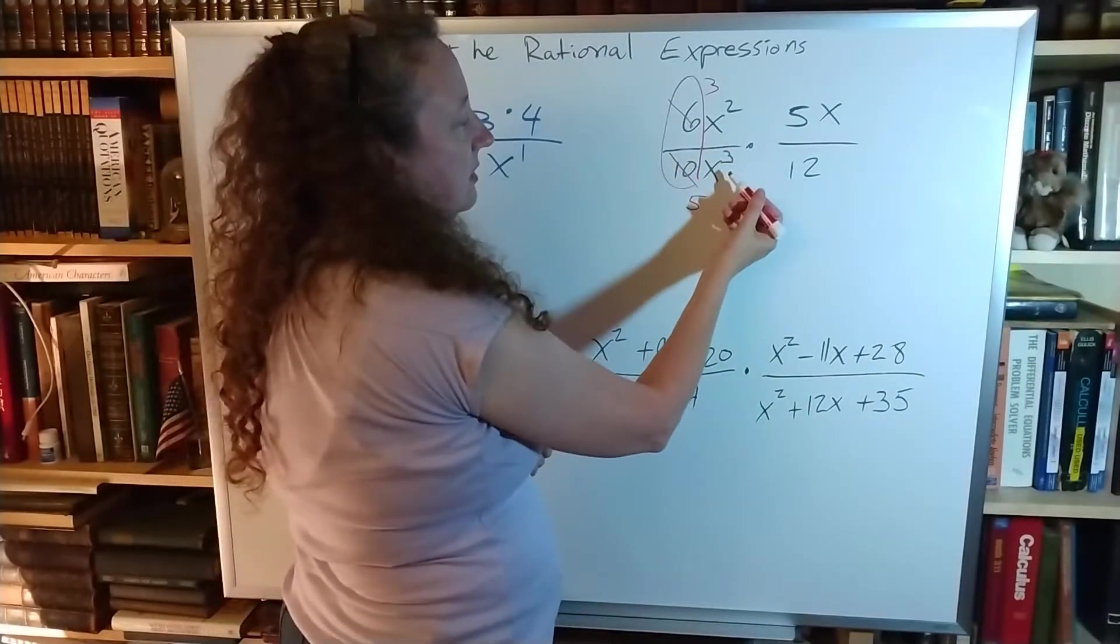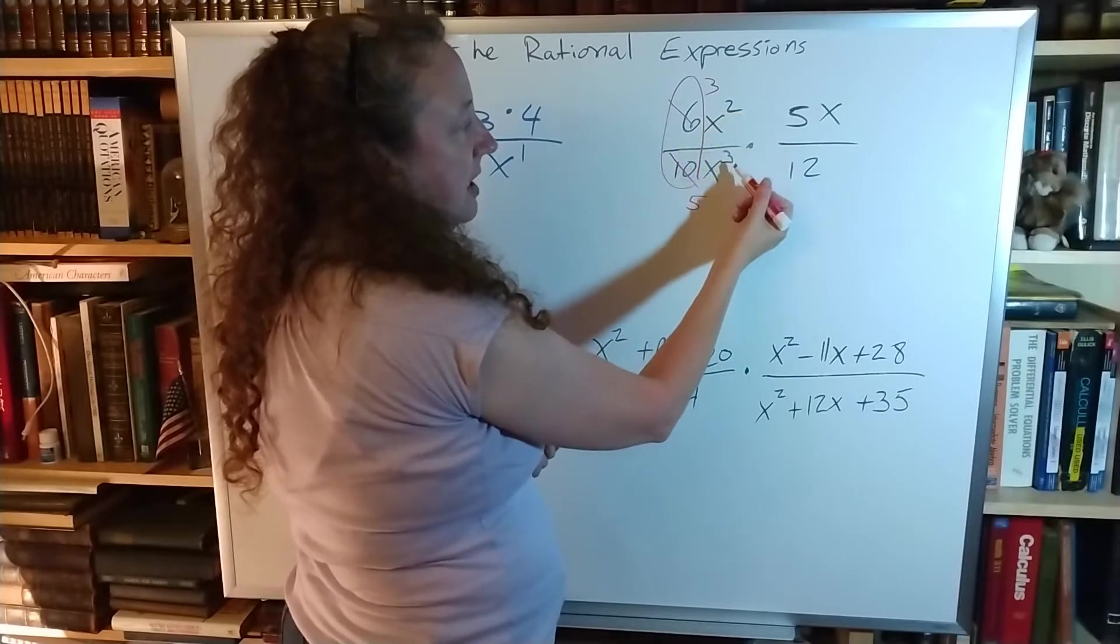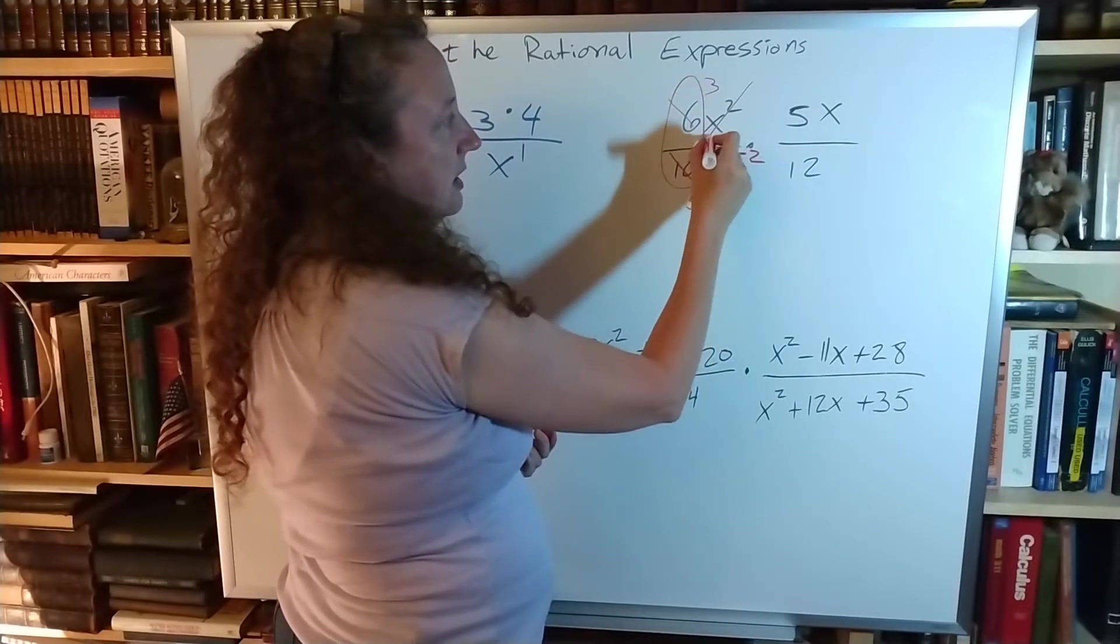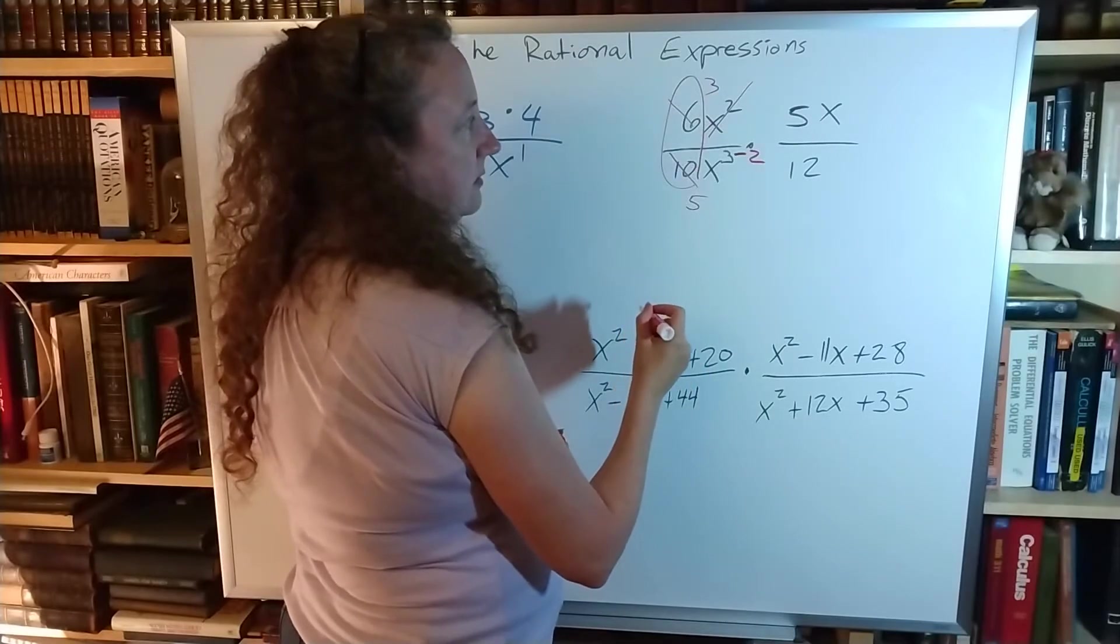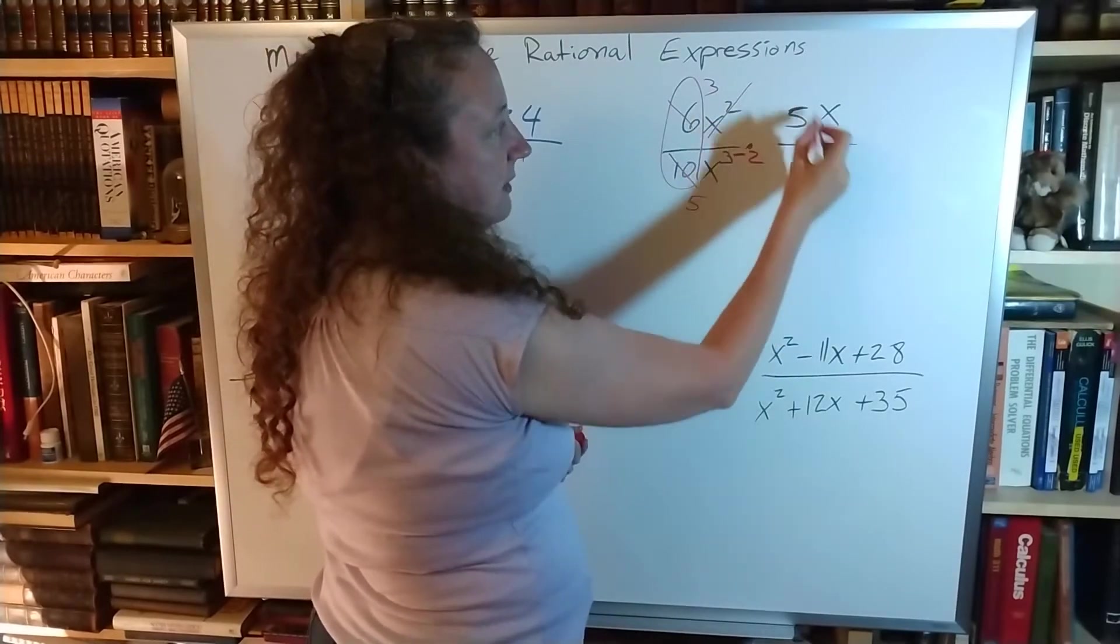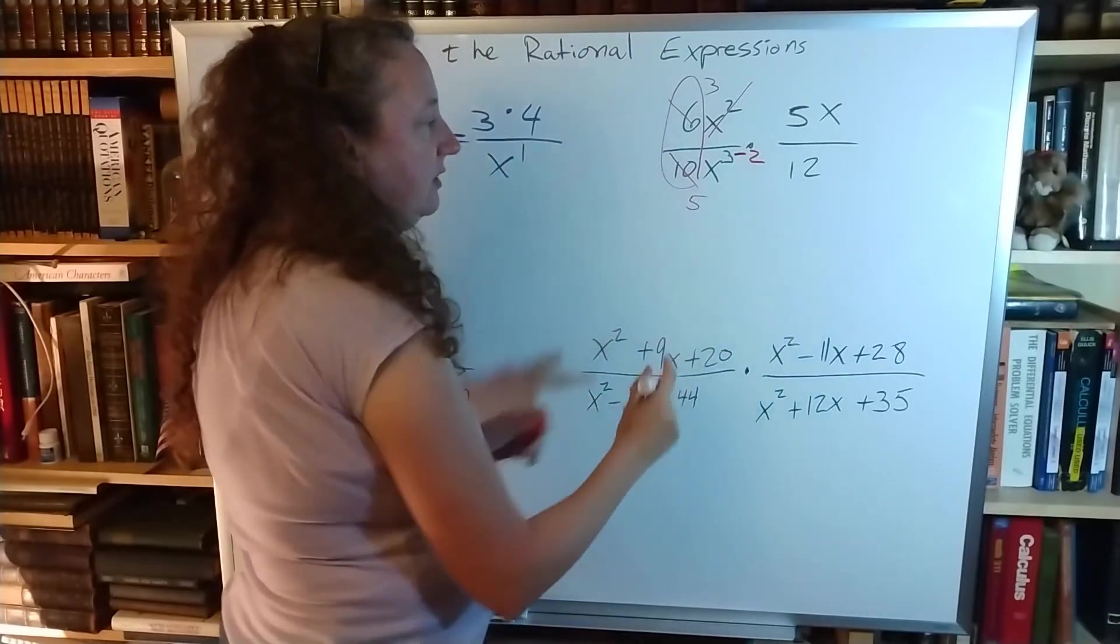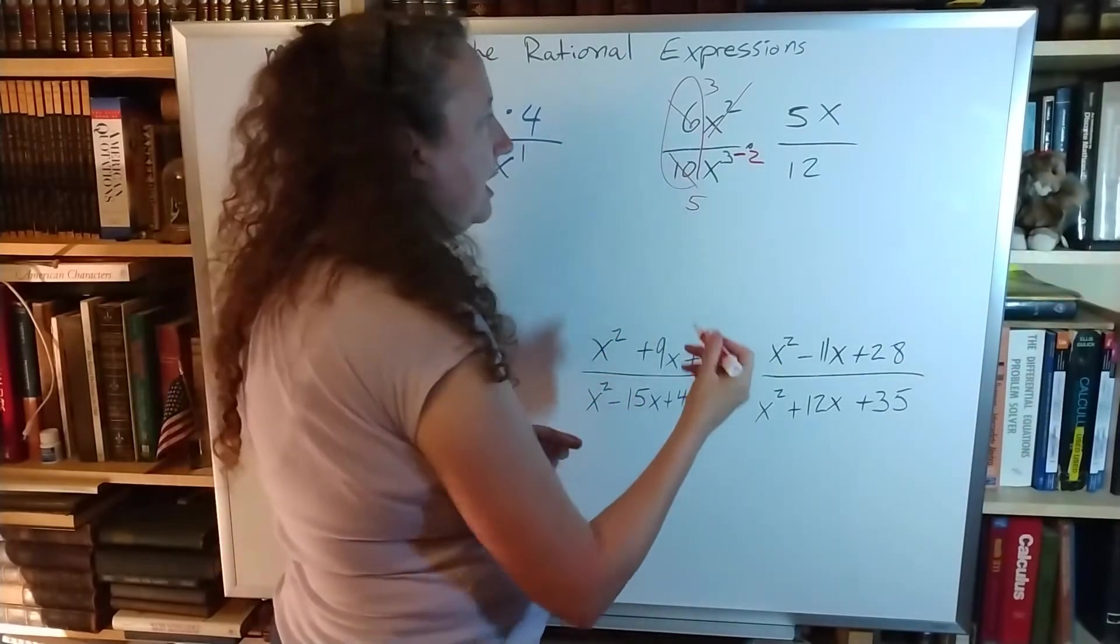The x's, I have 2 up top, I have 3 on the bottom. So I'm going to subtract the 2 there, and that cancels that one out. Looking at this fraction, I can't reduce the 5 and the 12, so I'm just going to hold on to that as it is. And I'm going to rewrite it.